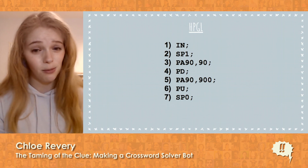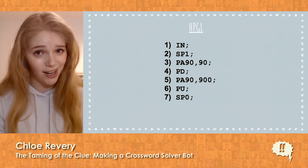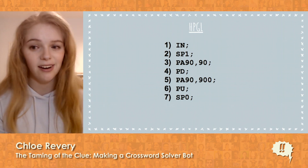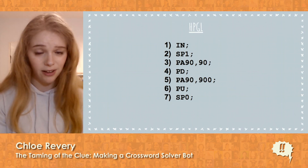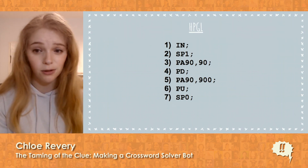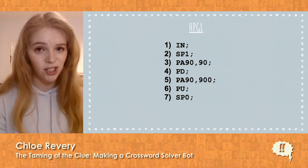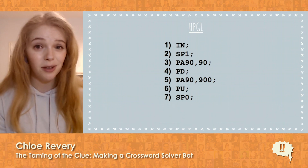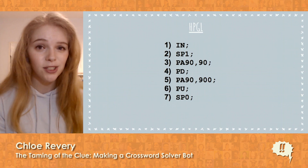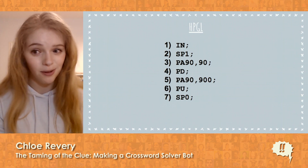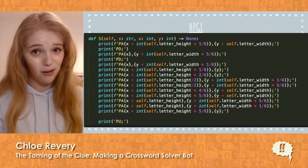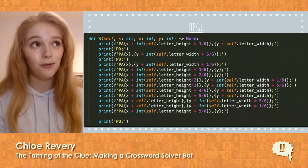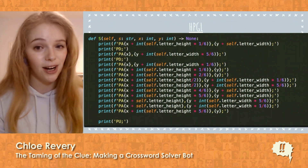Wow, that was terrible. To avoid writing any more HPGL than absolutely necessary, I wrote a Python library that converts puzzle files — blank, partially filled, or fully filled — to HPGL. And it turned out to be only marginally less terrible than the original HPGL. Here's a sample — how you write the letter S. So after spending an entire day relearning how to write the alphabet, I was finally able to put everything together.